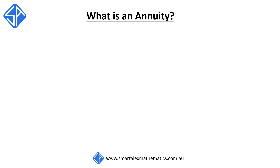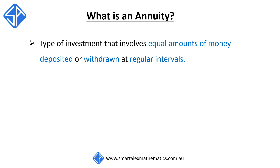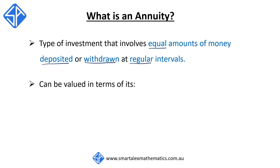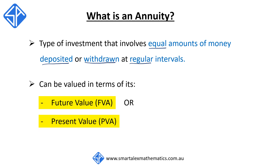So what is an annuity? In simple terms, it's a type of investment that involves equal amounts of money that is deposited or withdrawn at regular intervals. We can value an annuity in terms of its future value, FVA — how much the whole investment is worth in the future — or in terms of its present value, PVA — how much the investment is worth in today's dollars.